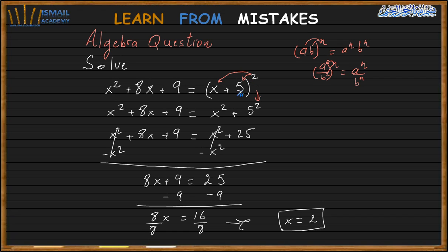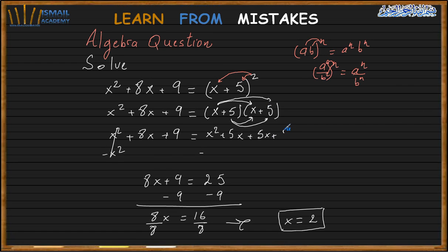So what we need to do here is distribute. Same thing if I have x plus 5 times x plus 5, x times x is x squared, then 5x plus 5x, and 5 times 5 is 25. So it's going to be x squared plus 5x plus 5x plus 25.